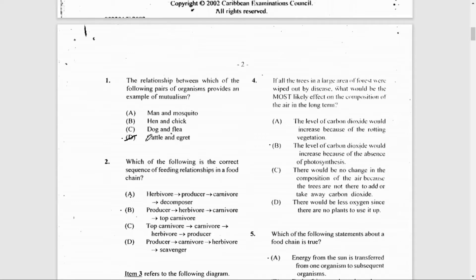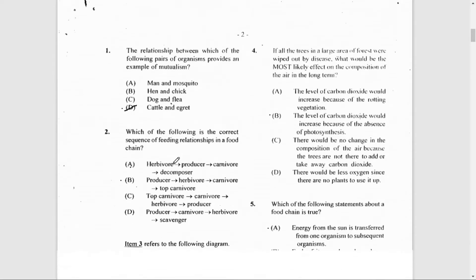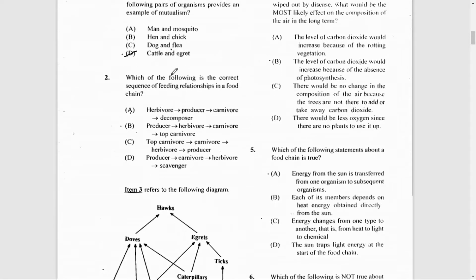Number 2: Which of the following is the correct sequence of feeding relationships in a food chain? The answer here is B: producer, then herbivore, then carnivore, and finally top carnivore. The herbivore feeds on the producer, the carnivore feeds on the herbivore, and the top carnivore feeds on the carnivore.